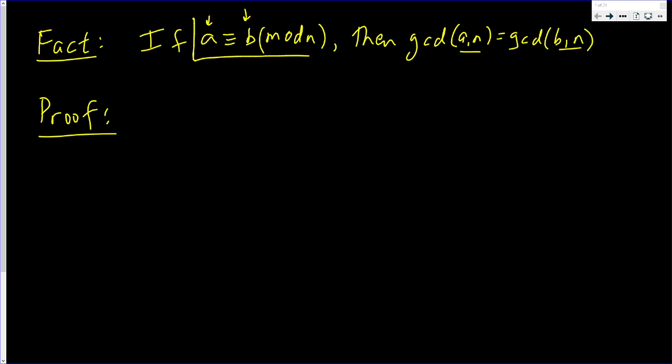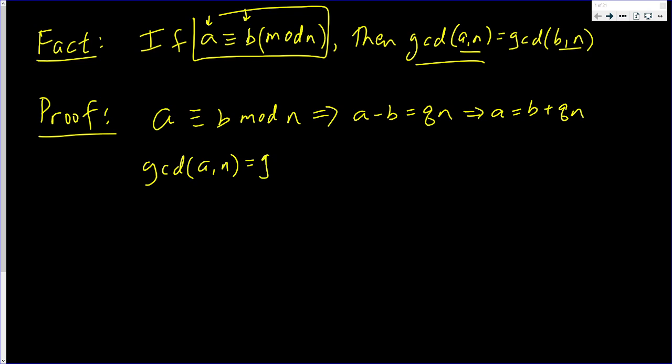So, let's work with the given. A is congruent to B mod N. That implies that A minus B is a multiple of N. That implies, bringing B to the other side, that A is B plus QN. So, this tells us that the GCD of A, N is equal to the GCD of any old way of writing A, which is this way, comma N.